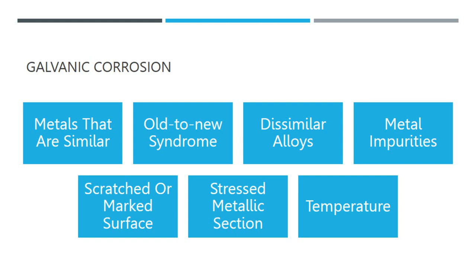Metal impurities arise because there is no perfect manufacturing process; as the metal is created or cooled, minute impurities may be incorporated into it. If there are metallic impurities on the metal's surface, they may be anodic — in which case they will corrode and leave a pit behind — or cathodic, or they may become a component of the electrolyte and cause concentration cell corrosion.